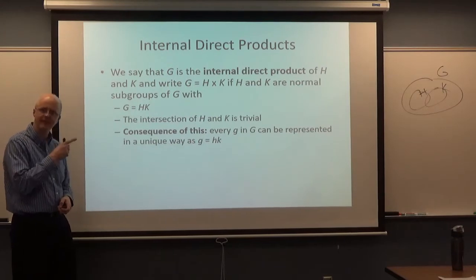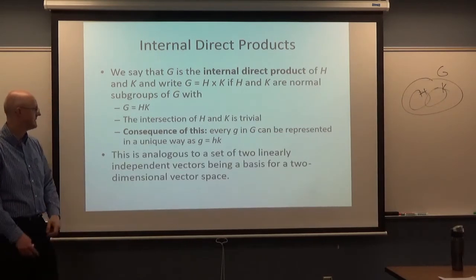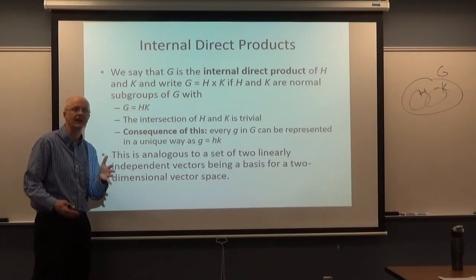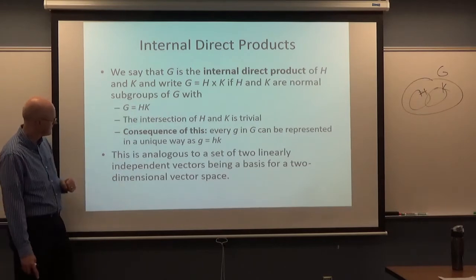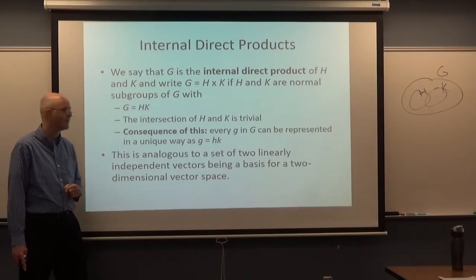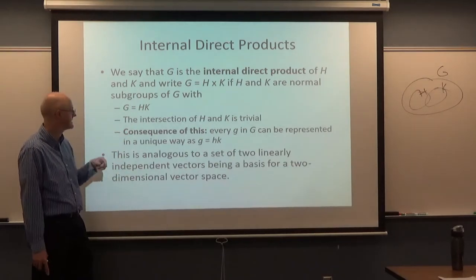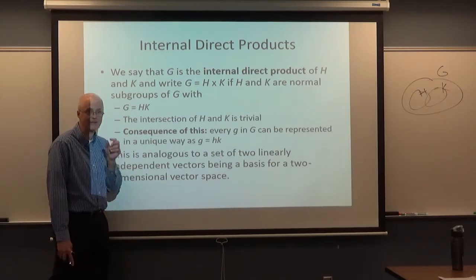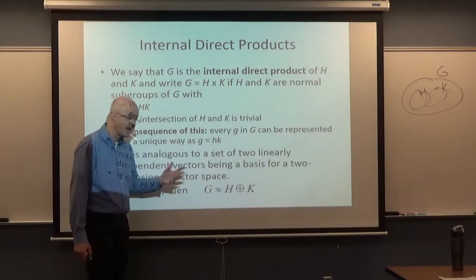Before we get into the proof that internal direct products are isomorphic to external direct products, it's worth mentioning this is analogous to a two-dimensional vector space — considering just two subgroups. It's analogous to a set of two linearly independent vectors being the basis of a two-dimensional vector space, where one vector is a basis for H and one for K, and linear independence essentially means the intersection is trivial. The theorem is: if G is the internal direct product of H and K, then G is isomorphic to the external direct product of H and K.